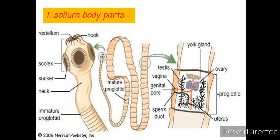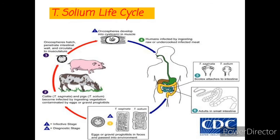It also has a neck that is between the scolex and the strobila. The strobila consists of proglottids. Every proglottid contains both male and female reproductive systems that produce the eggs.